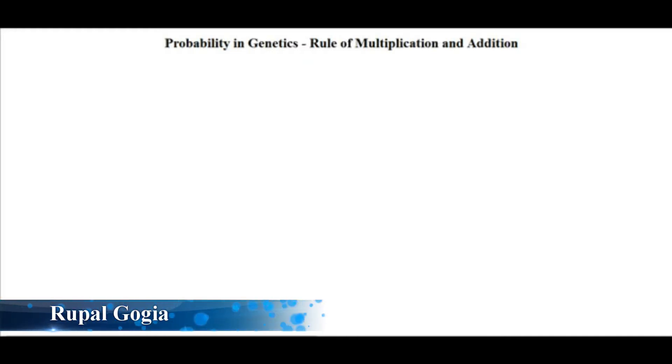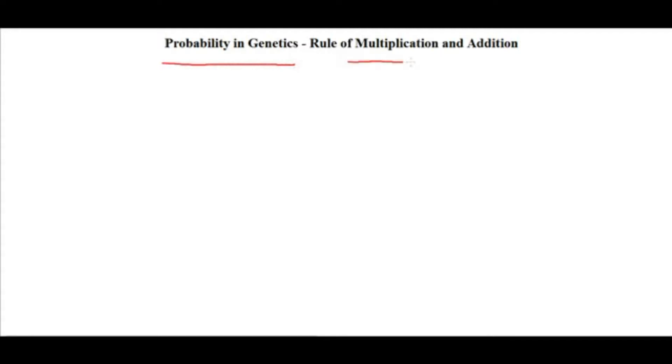Hey guys, welcome back. Today we are talking about probability in genetics — specifically the rule of multiplication and addition. If you need, take pen and paper and try to practice during the video. Pause it as and when you need — that will make the video very interesting and easy to understand. So let's begin.